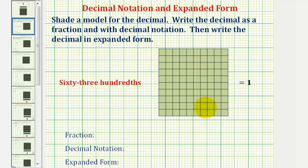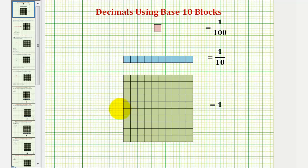Before we begin, let's define our decimal grid. We'll define the ten by ten grid, often called a flat, as one. And therefore the one by ten grid, often called a long, equals one tenth. Notice ten longs equals one flat, since ten tenths equals one.